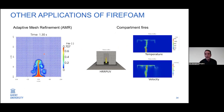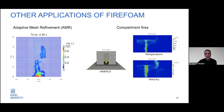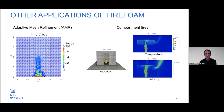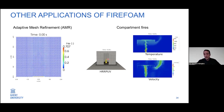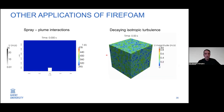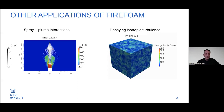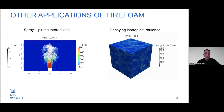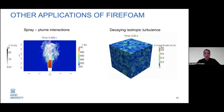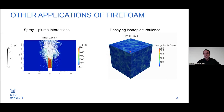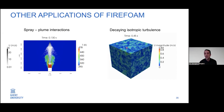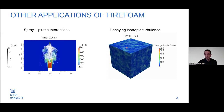Other applications of FireFoam include: an attempt to use adaptive mesh refinement (AMR) on the helium plume scenario to reduce grid count and computing time; compartment fires; and spray-plume interactions — a simulation of an FM Global experiment involving a spray with thermal plumes at different convective heat release rates. We have also looked at benchmark cases like decaying isotropic turbulence to validate our turbulence model.